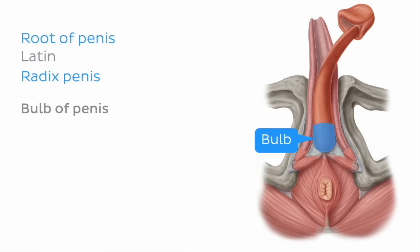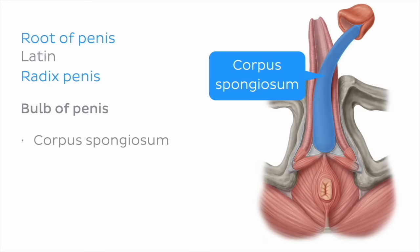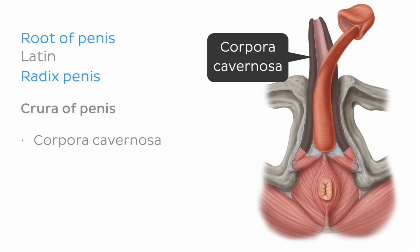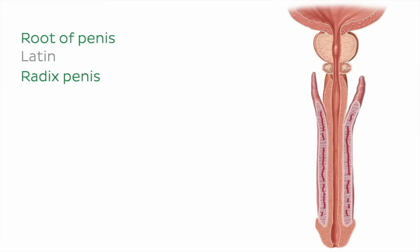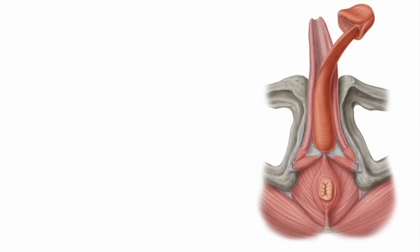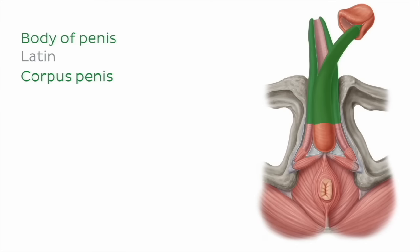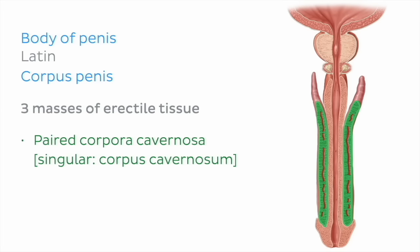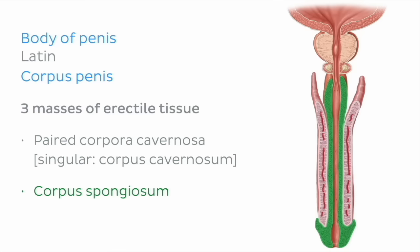The bulb of the penis is formed by the proximal expansions of corpus spongiosum, while the crura of the penis are formed by the paired corpora cavernosa. Here we can see these structures in a coronal view, with the bulb and crura of the penis highlighted in green. Returning to our inferior view, the body of the penis makes up the majority of the organ, and is similarly composed of three masses of erectile tissue, the paired corpora cavernosa and the corpus spongiosum.